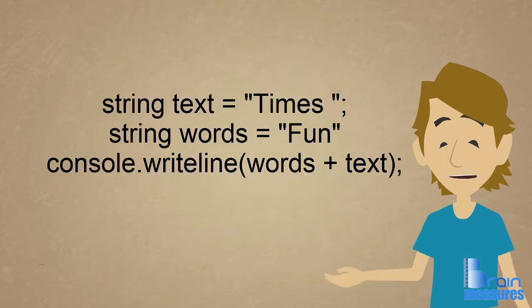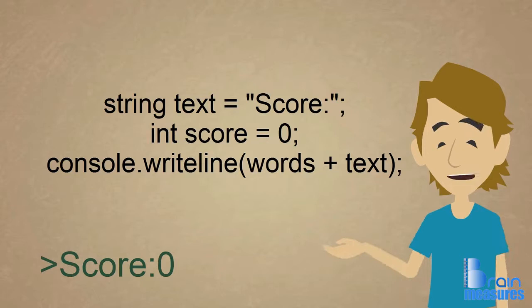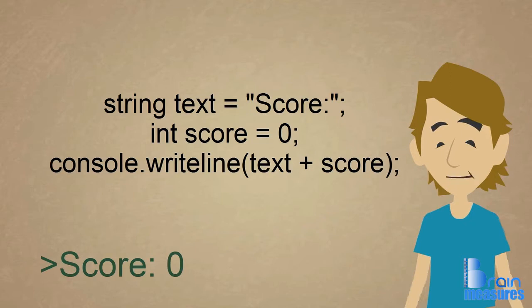We can also print integers. Some common examples of integers on the screen are score, lives, money and time. Can you think of more kinds of numbers that we would use in apps or games? I've changed the variable text to score and I have changed the string variable to an int variable, called it score and set it to zero. Whoops, I forgot to add a space at the end of score. It looks much better this way.